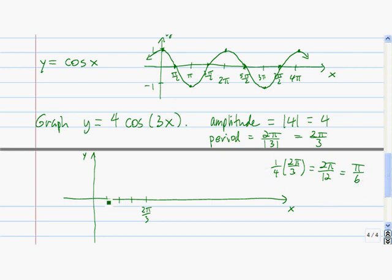So we start at 0, then we go to π over 6. Then we go another π over 6, so that's 2π over 6, or π over 3.